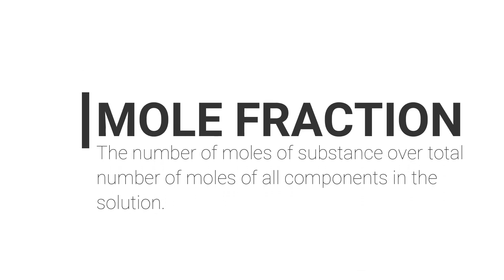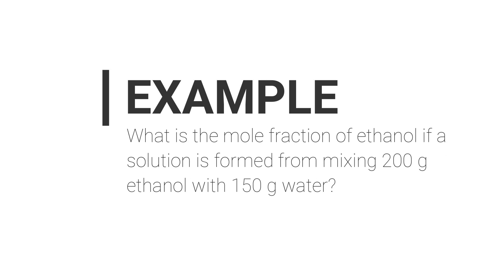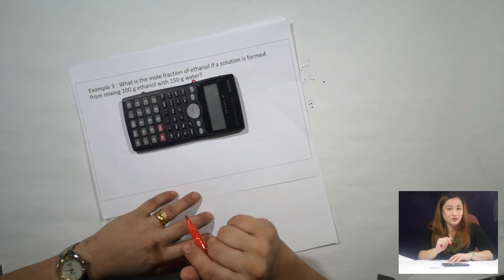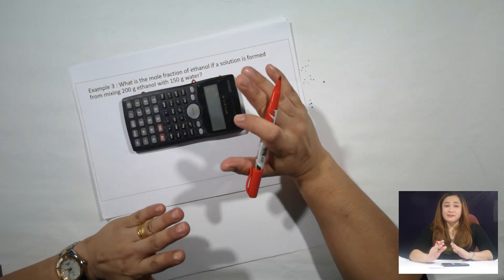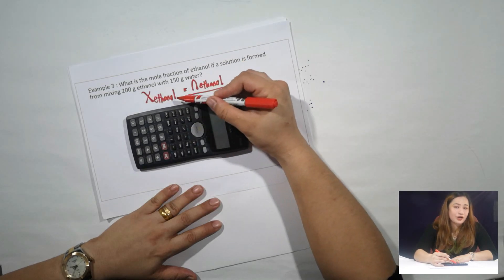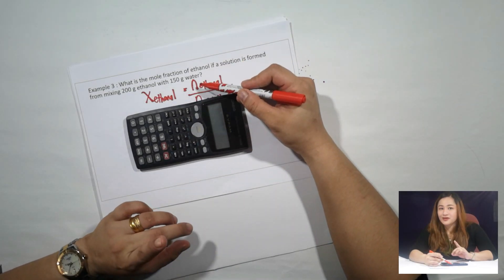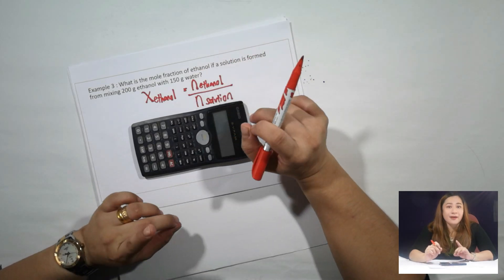Molfraction is the number of mol of a substance over the total number of mol of all components in the solution. Let us now move to the question: what is the molfraction of ethanol if a solution is formed from mixing 200 grams of ethanol with 150 grams of water? First, let us look into the formula. The molfraction of ethanol, which can be symbolized by chi (χ), is equal to the number of mol of ethanol divided by the number of mol of solution.